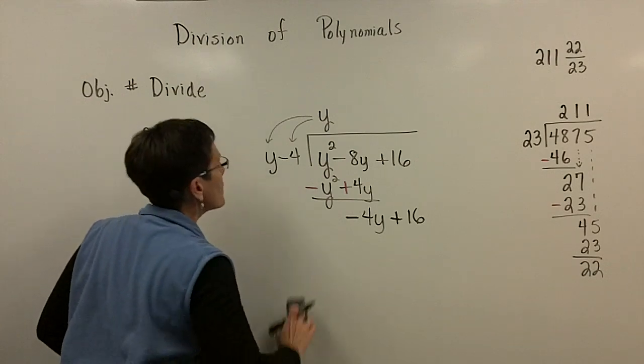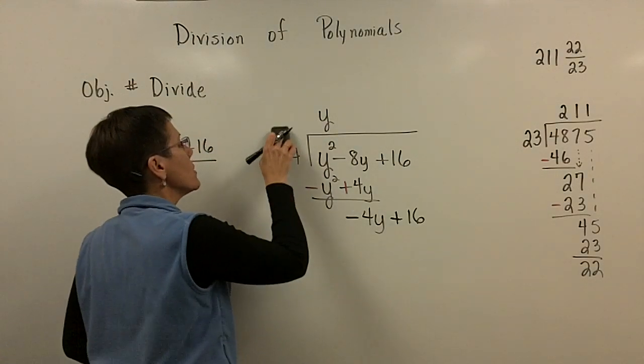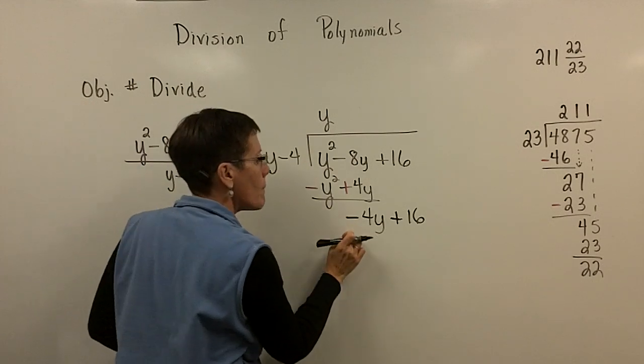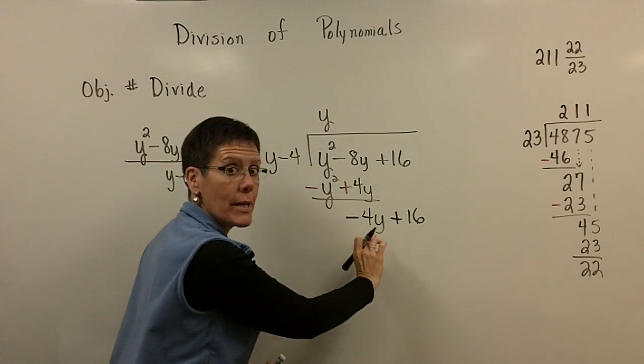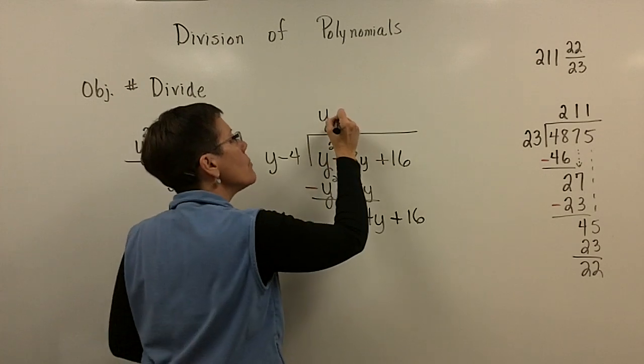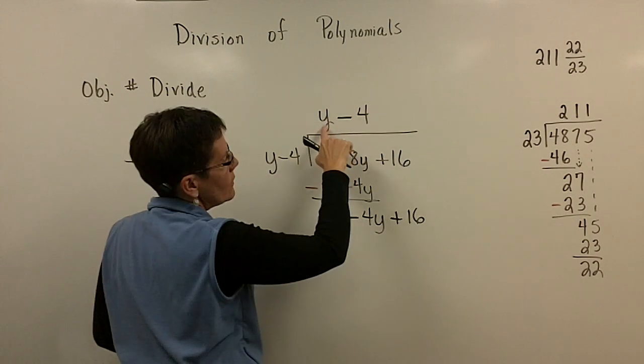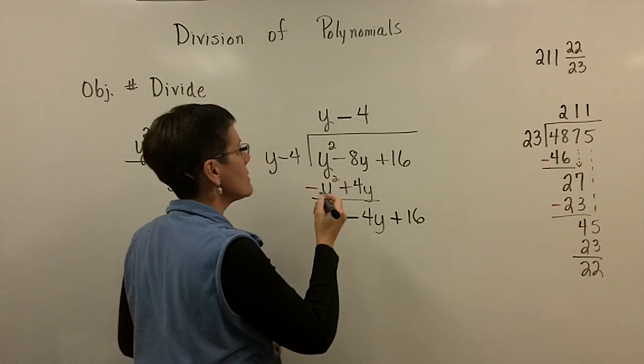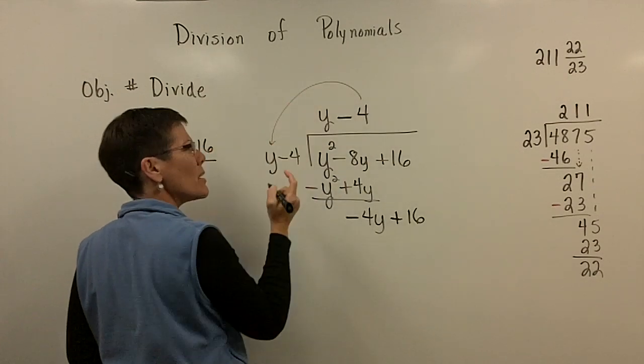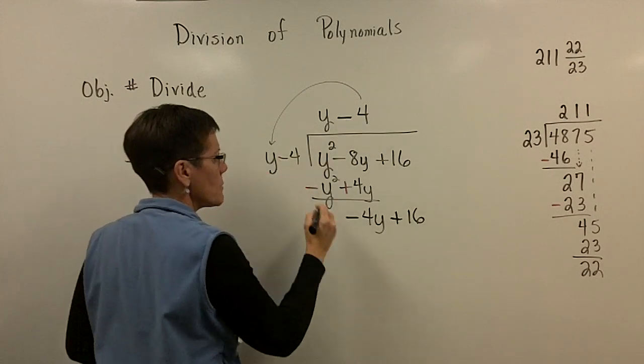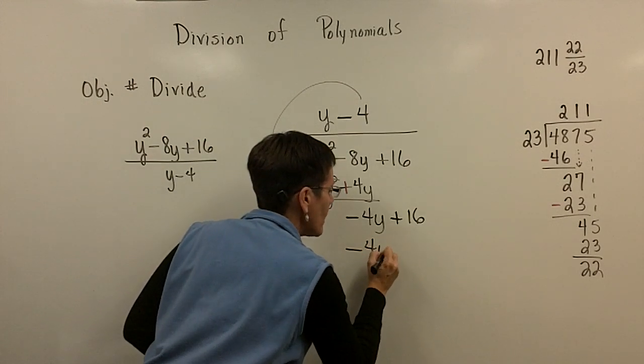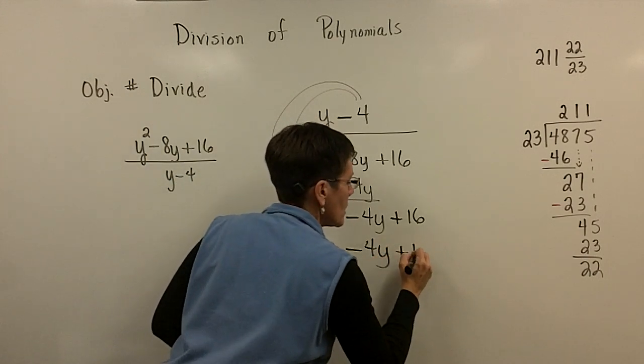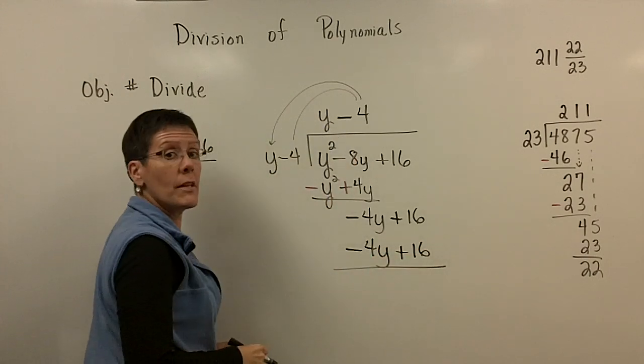So I'm going to ask you now, what number times y gives you a minus 4y? Exactly, I want that to match. And the number is a minus 4. These are going to descend. It was y to the first power, now I'm going down to the constant. And then you're just going to check for yourself and you're going to say, was I right? Did a minus 4 times y give me a minus 4y? And then does a minus 4 times a minus 4 give me? It gives me 16.